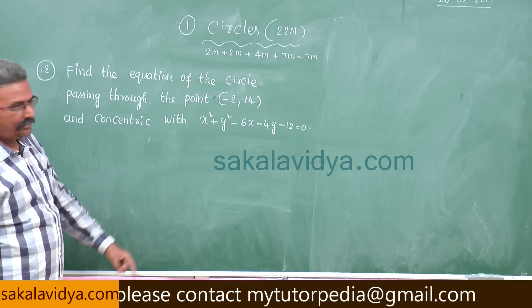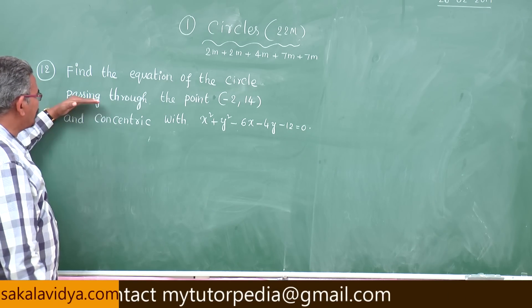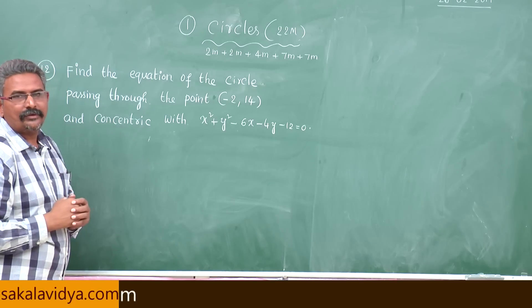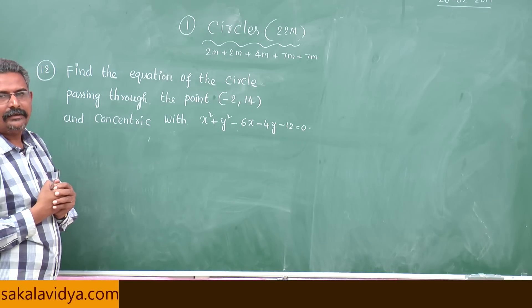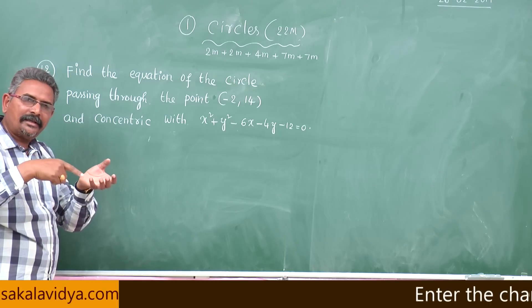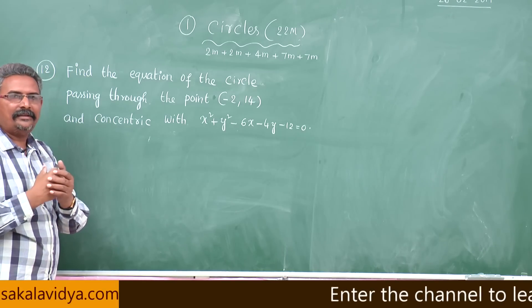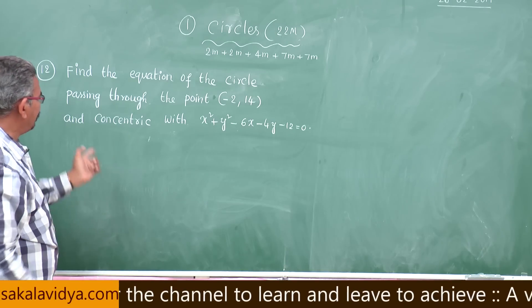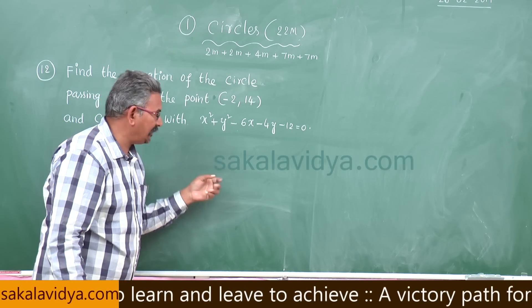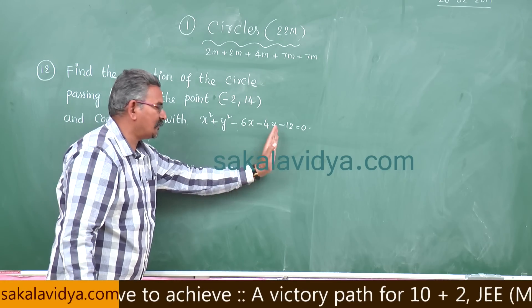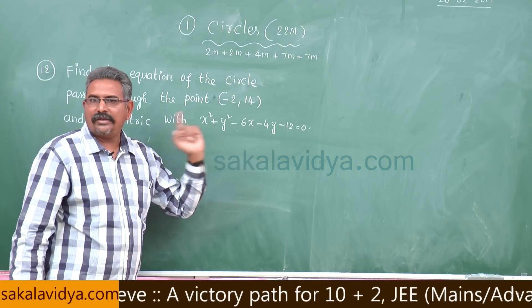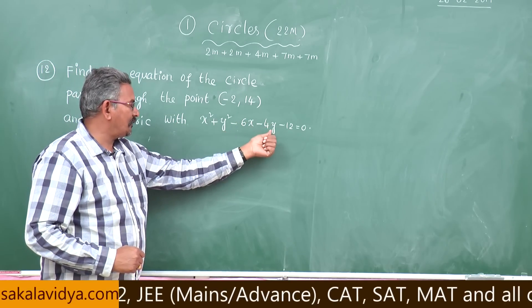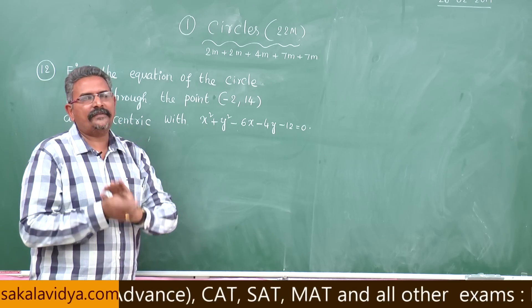We have to find the equation of the circle passing through the point (-2, 14) and concentric with the given circle. Concentric circles are circles which have the same center but different radii — they differ only by the radius. So the equation of a circle concentric with x² + y² - 6x - 4y - 12 = 0 can be written as x² + y² - 6x - 4y + k = 0, with just a constant difference.